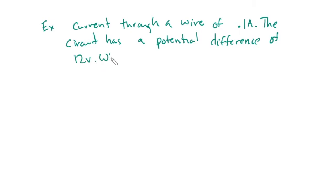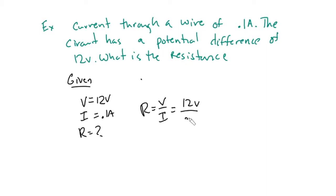Let's look at an example of how we'd use Ohm's law. If I say that, for example, I have a current going through a wire of 0.1 amps, the circuit has a potential difference of 12 volts. What is the resistance? So I would just look at my givens. And I would say that V equals 12 volts, and that I equals 0.1 amps. And I want to know what is R. So we say R equals V over I, which equals 12 V over 0.1 amps. And you are left with R equals 120 ohms.